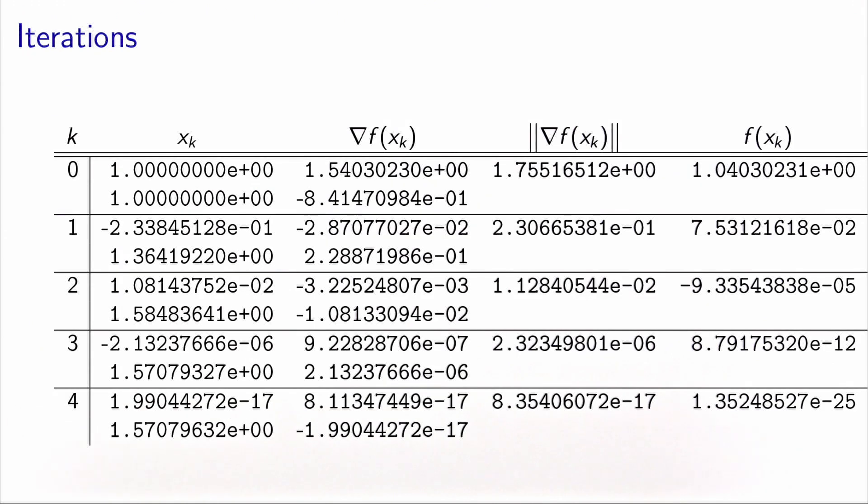So this slide reports the numerical values produced by the algorithm. The first column reports the number of iterations. The second column reports the value of the iterates, xk. The third column reports the gradient at each iteration. This is the quantity that we would like to make equal to zero. The fourth column is the norm of the gradient. And the last one reports the value of the objective function at each iteration.